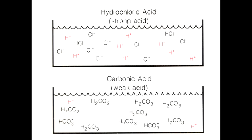In hydrochloric acid solution there are a lot of hydrogen ions because HCl is a strong electrolyte and dissociates completely. Carbonic acid is a weak electrolyte and after its partial dissociation there are only several hydrogen ions in solution.